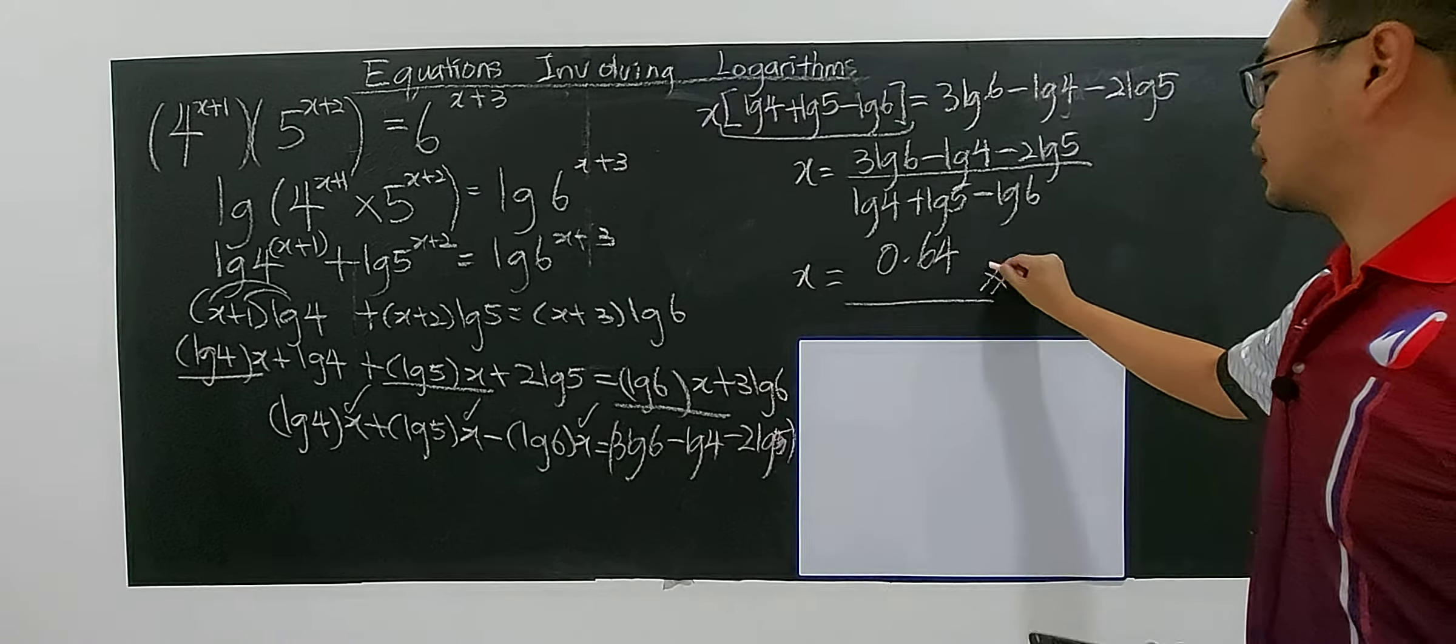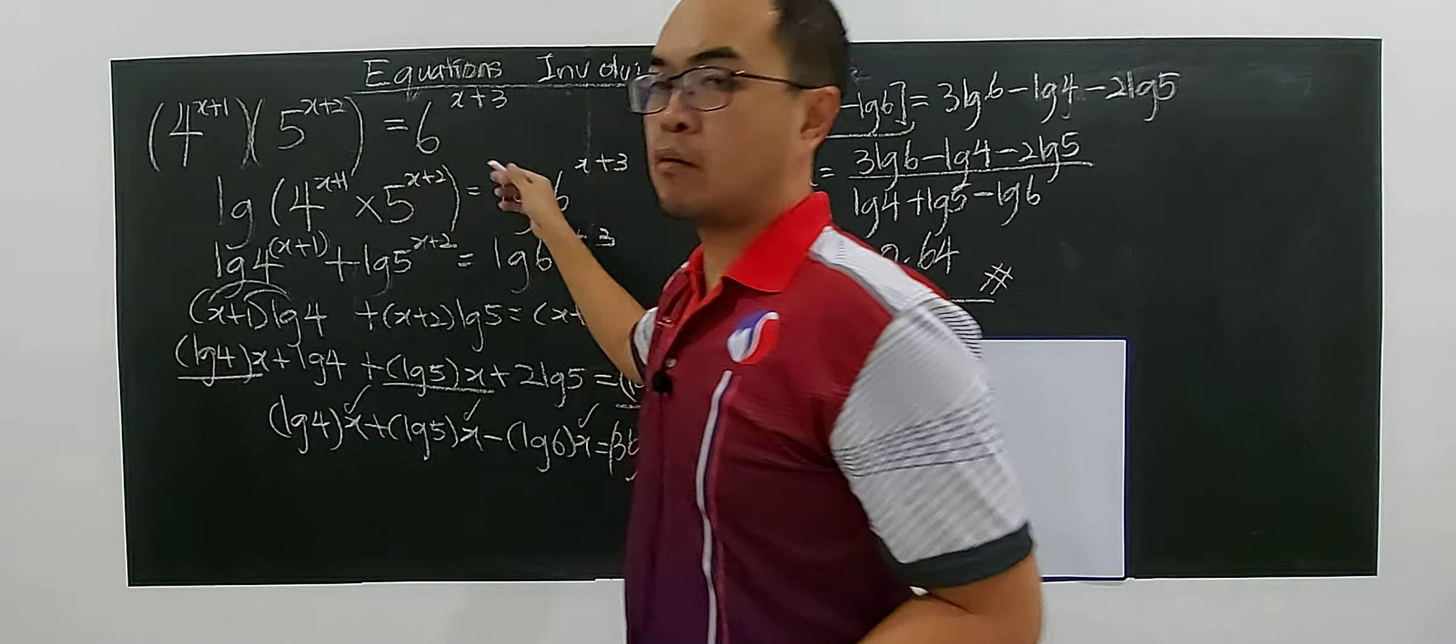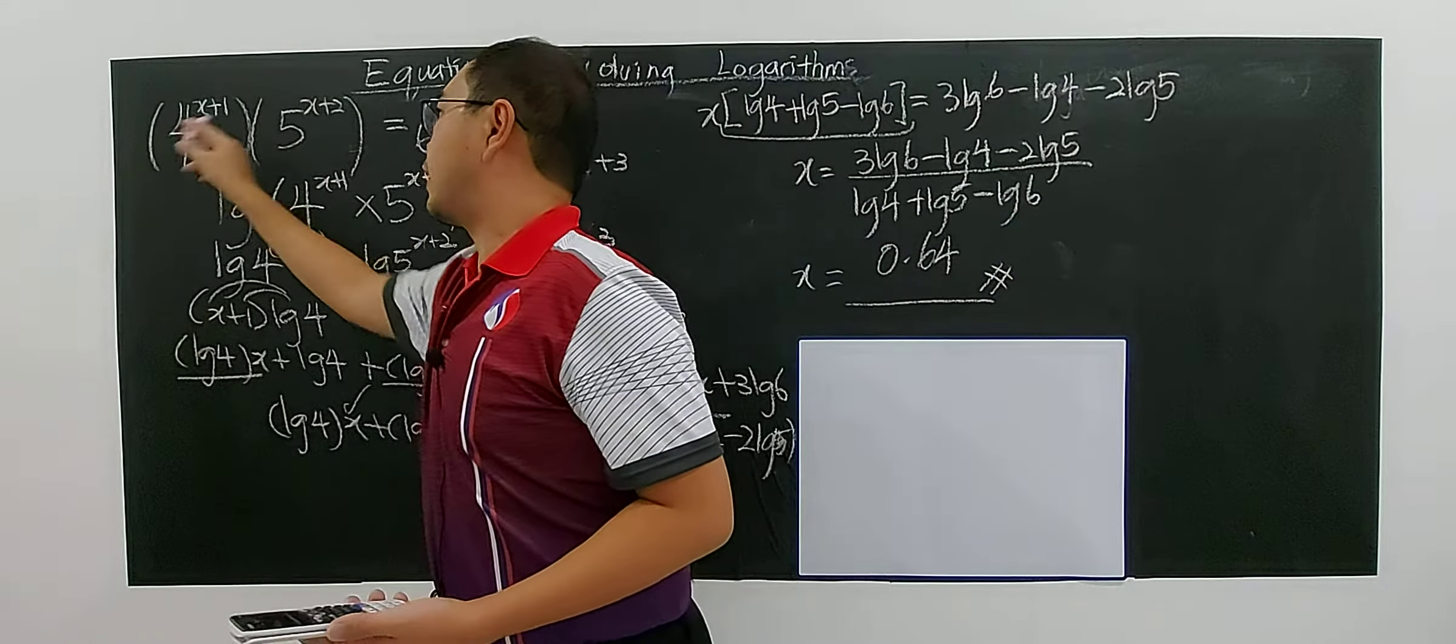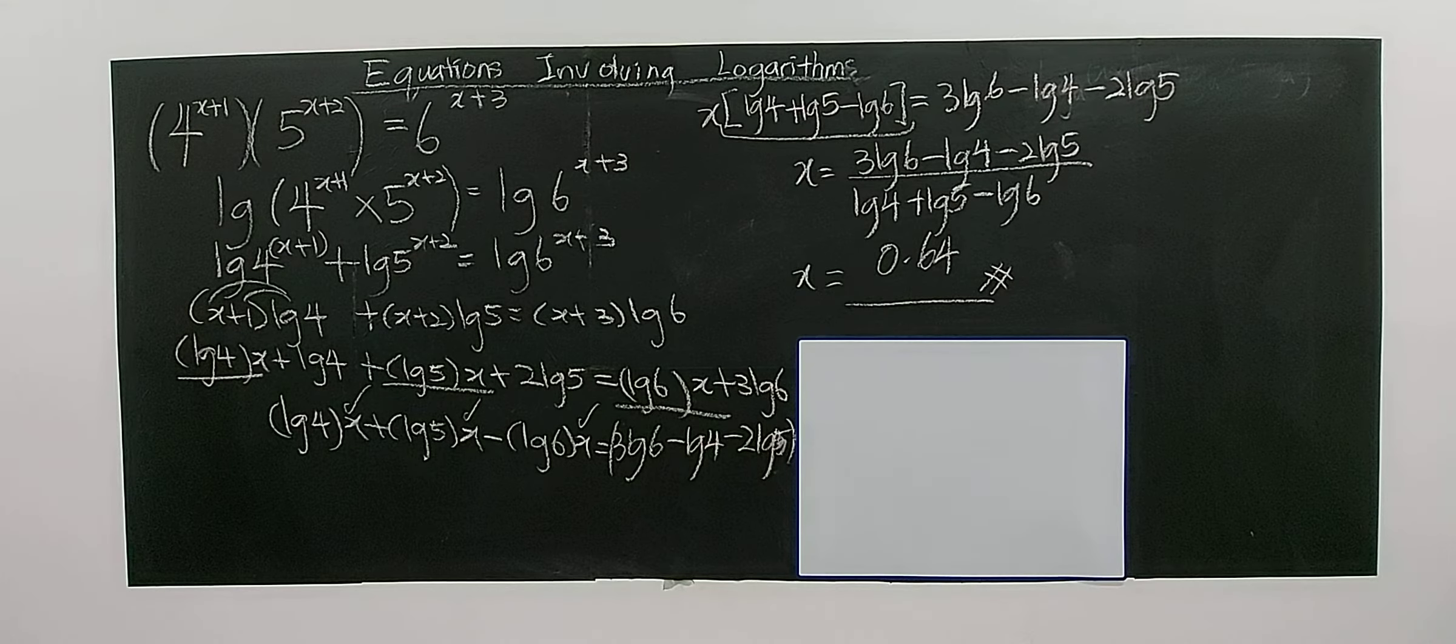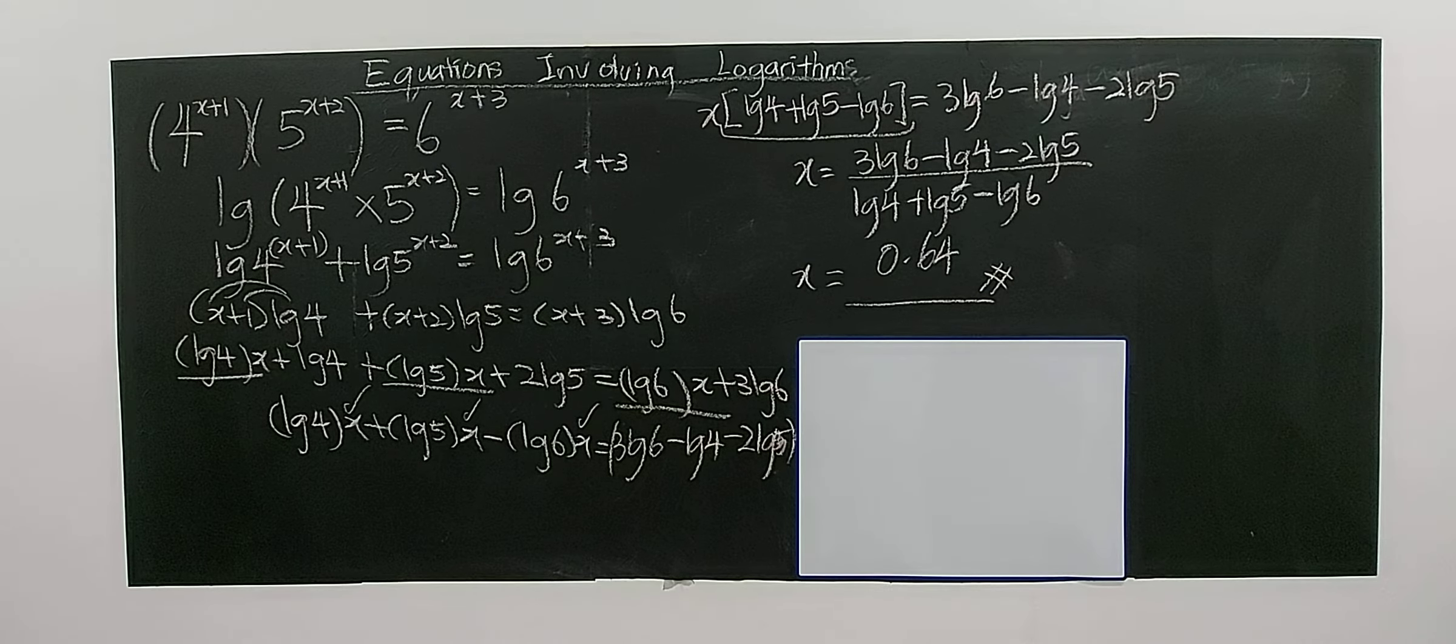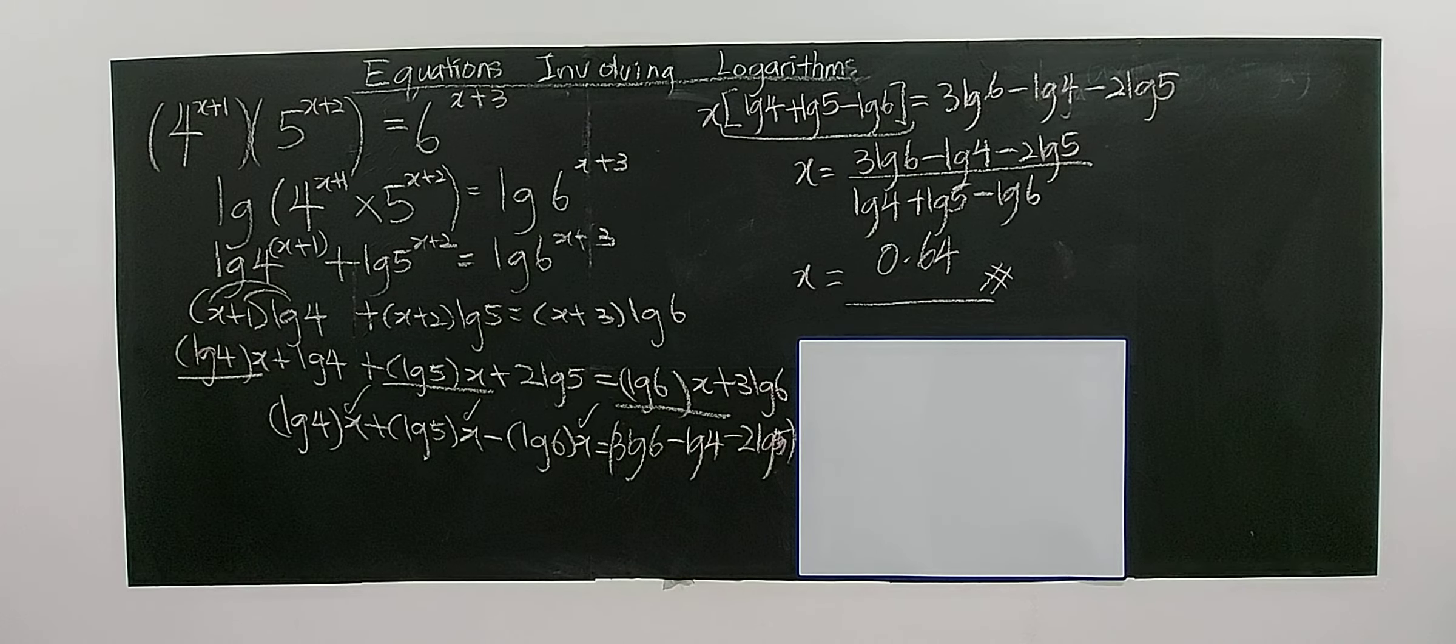The most important thing to remember is why you should put log on both sides. As I mentioned earlier, the terms have different bases. Even if you convert to the smallest base, they remain different, so you need logarithms to solve this equation. That's all for this concept.